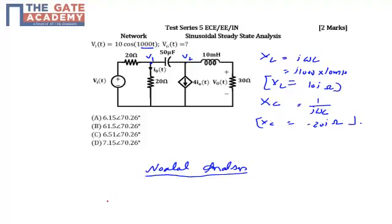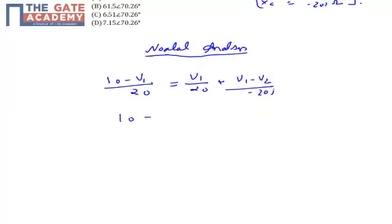So let's apply the KCL at node V1. My equation is (10 minus V1) upon 20 which is equal to V1 by 20 plus (V1 minus V2) by minus 20j. Now if I simplify this, 10 will be equal to (2 plus j) times V1 minus 2j plus j times V2. This is equation number 1.